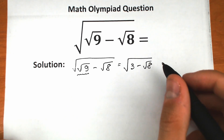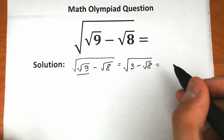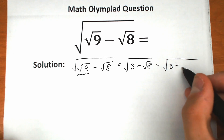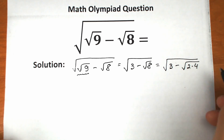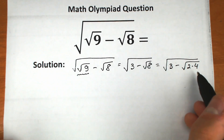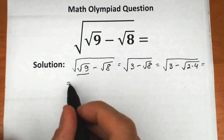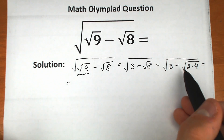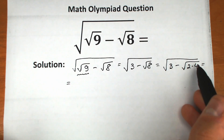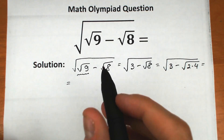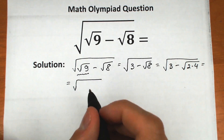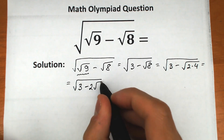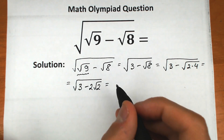Now, square root of 8 — we can write it as square root of 2 times 4. We should know the rule: if we have square root of a times b, we can write it as square root of a times square root of b. So in this case we get square root of 2 times square root of 4, which equals 2 square root of 2. So we have 3 minus 2 square root of 2.